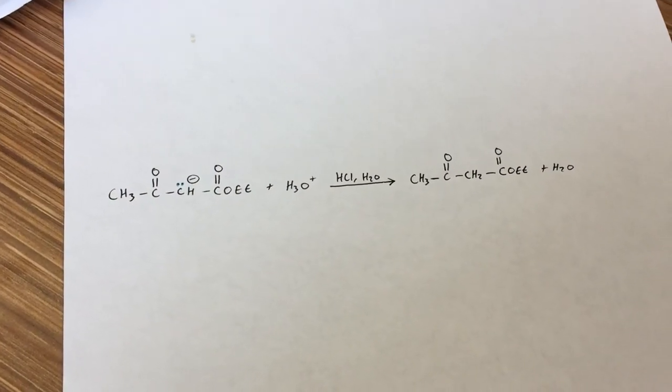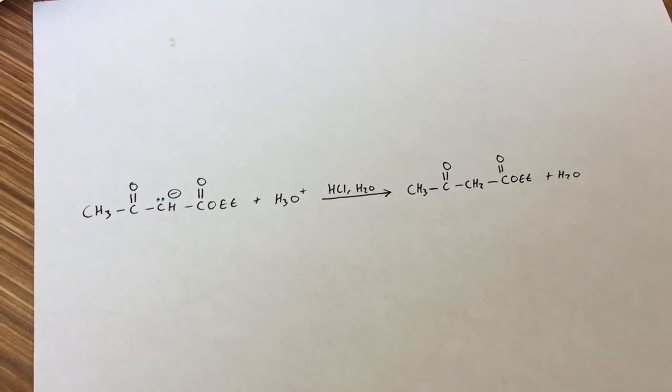And finally, we have the protonation of the enolate anion, which gives us the beta-ketoester.